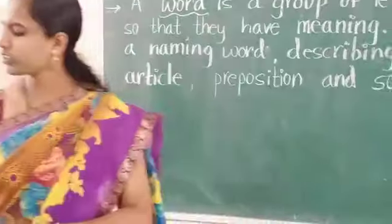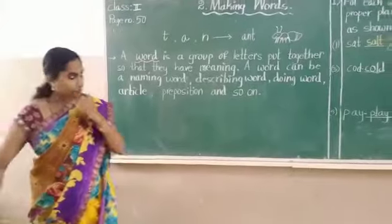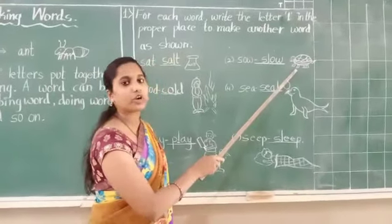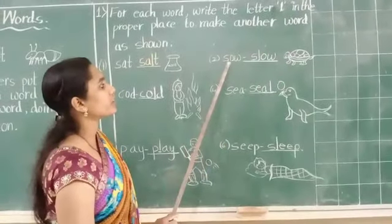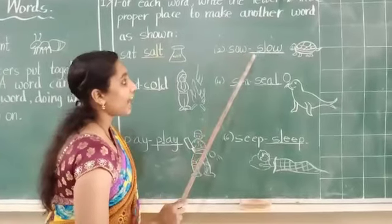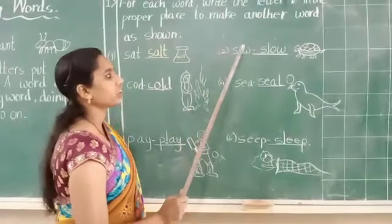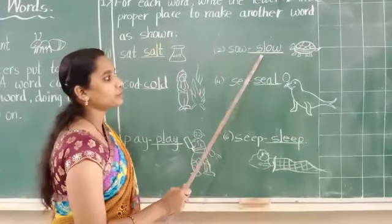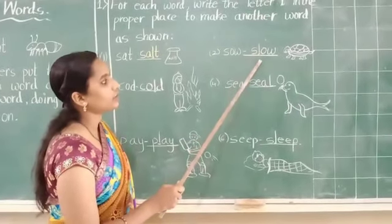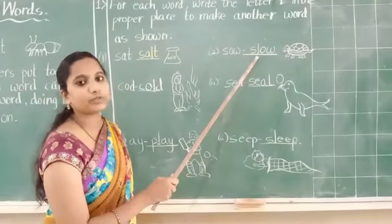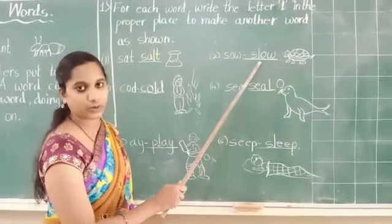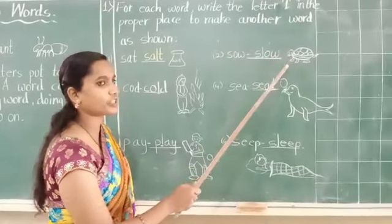Now let's go to second. What is this children? Tortoise. How it moves? Slowly, right? So here S-word only is given. We should add L here. We add L — it will become slow. It is also another word. By adding L it becomes another word. Tortoise is slow, so this word is related to this picture.